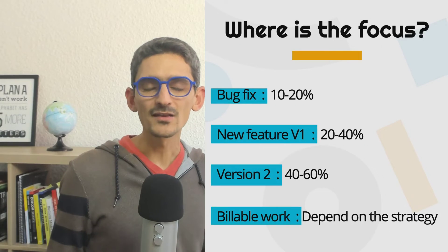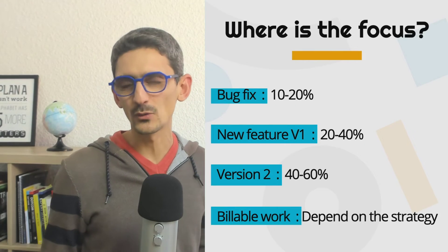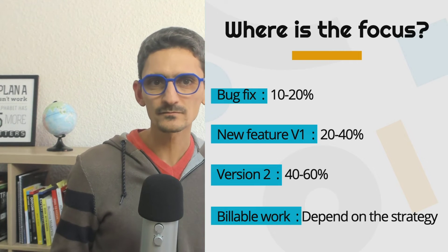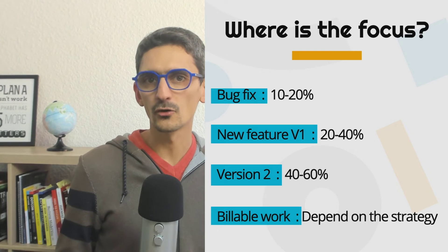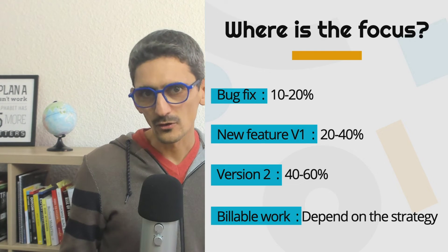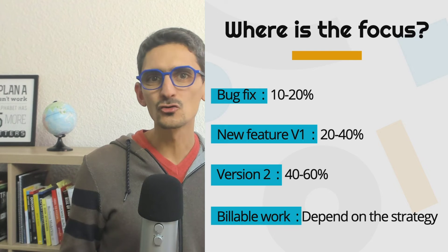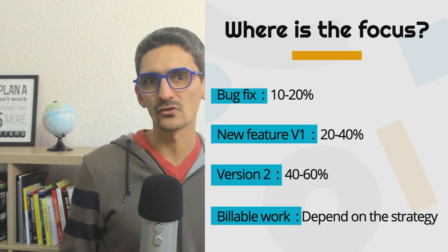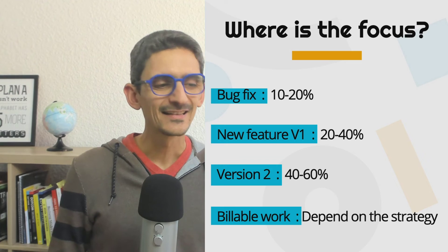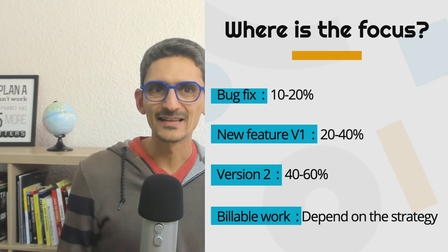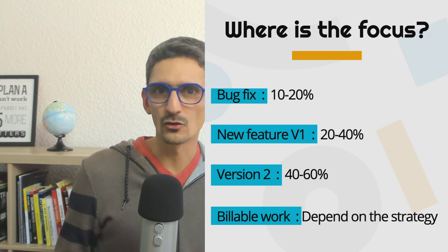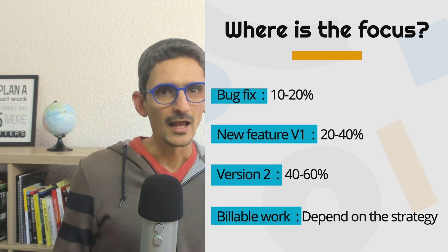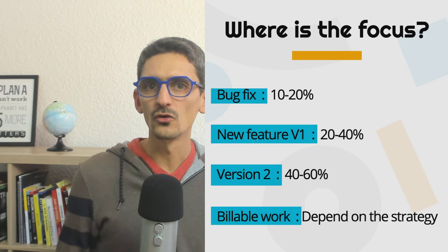That's why it's important to review this percentage on a regular basis. On average, you should not spend more than 20% on bug fixes — that's the maximum. If you are preparing a version two, you should not spend more than 40% on version one. And if version two is your focus, you should at least work 40% on that version. Of course, that's just a general trend — each startup is different. Some might need more cash than others, and in that case they should consider the billable work.